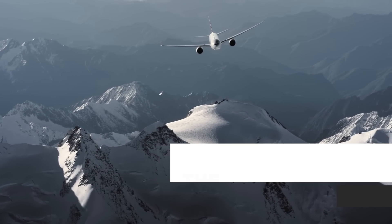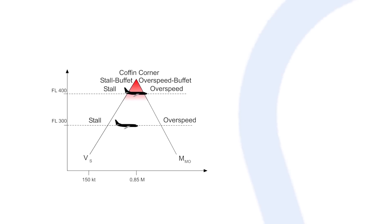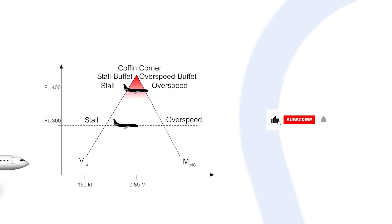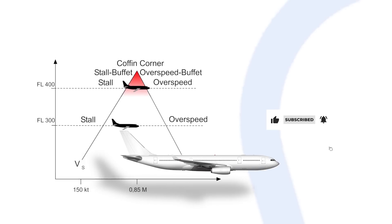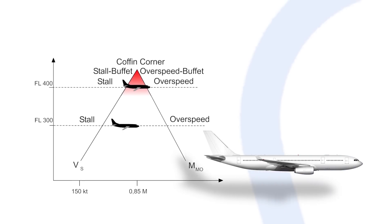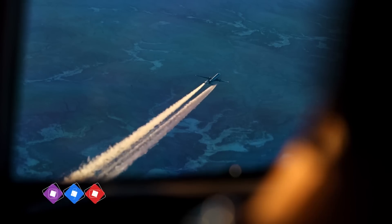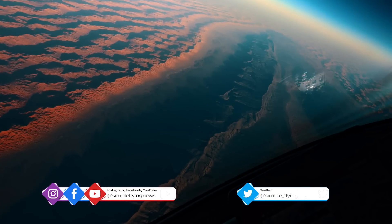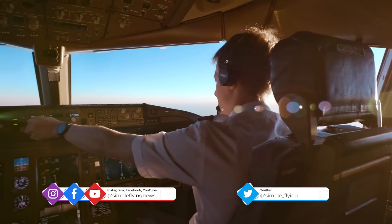The coffin corner refers to the intersection of a given aircraft's stall speed and critical Mach number. While stall speed is enough of a self-explanatory term, critical Mach number may be a less well-known term. Skybree reports that it refers to the lowest Mach number at which the airflow over any part of the aircraft reaches the speed of sound.